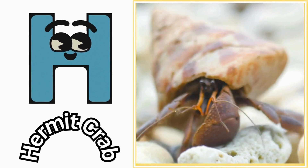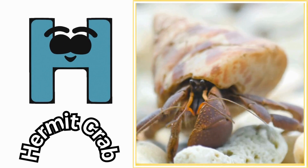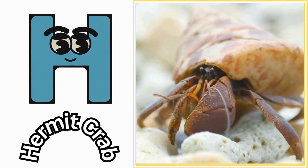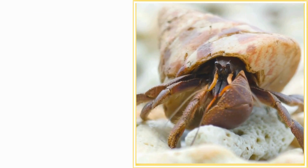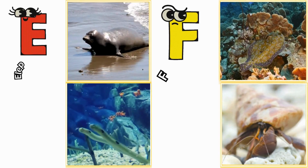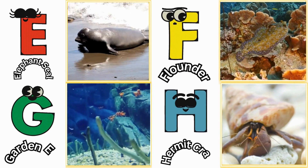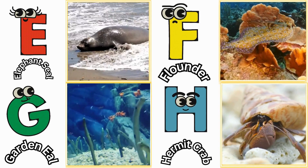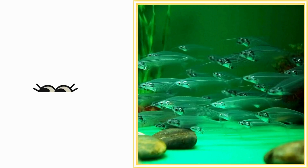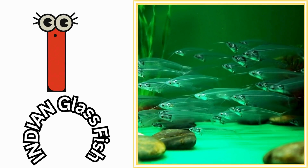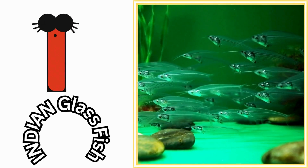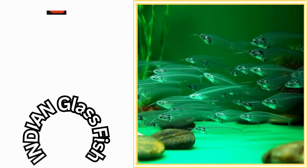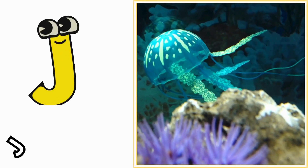H is for hermit crab. H, hermit crab. I is for Indian glass fish. Indian glass fish.